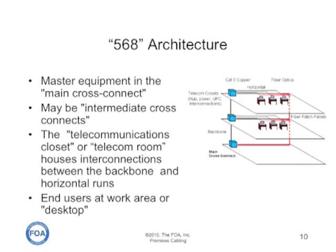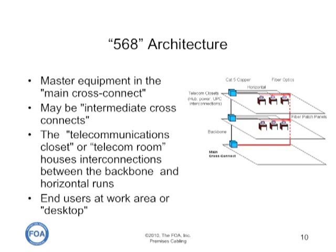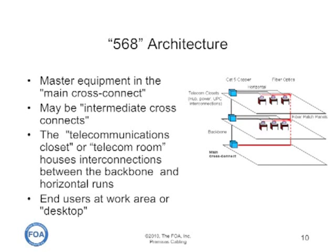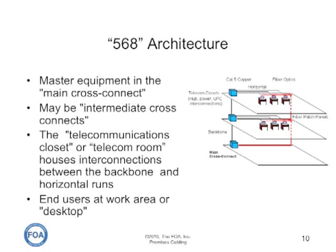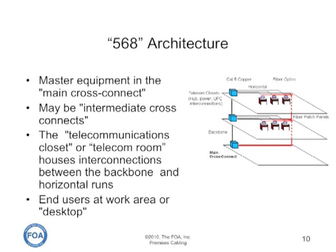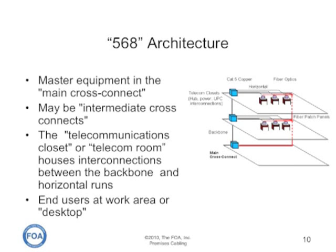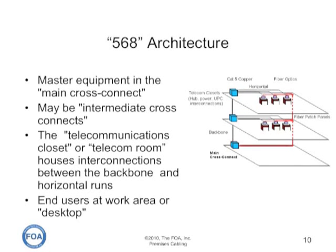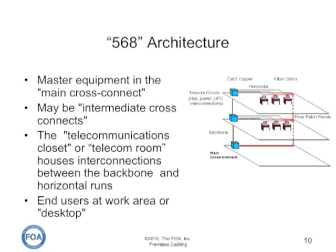The 568 architecture looks like this diagram, but the way it's defined has been changing over the years. The original nomenclature came from the telephone company, so the master equipment was in the main cross-connect, there would be intermediate cross-connects, telecom closets or wiring closets, and telecom rooms. All of these words really only talk about the same locations, but the nomenclature has been changing. There is a page on the FOA website on premises cabling that links to a basic history of these nomenclature changes. Generally, people refer to rooms as the equipment room, the telecom room, and the work area.